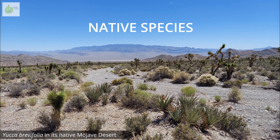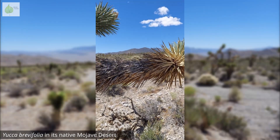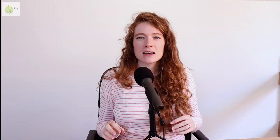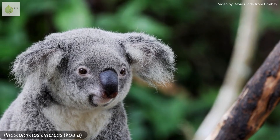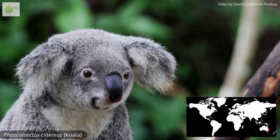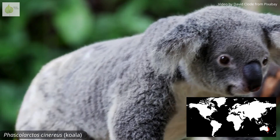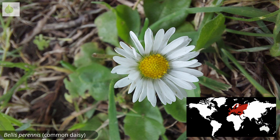Native species are the organisms that are naturally occurring in a certain geographical area or ecosystem. They are defined as organisms that either evolved at the place where they occur, or they historically naturally dispersed there without human influence. The term indigenous is sometimes used in place of native. Examples include a koala native to eastern Australia, a raccoon native to North America, or a common daisy native to Europe.